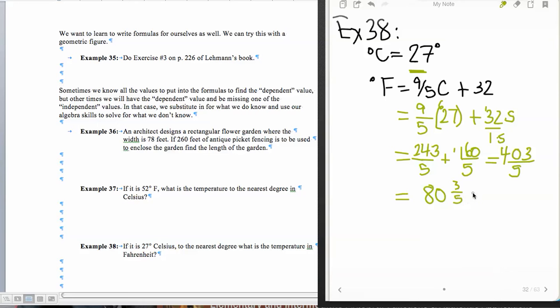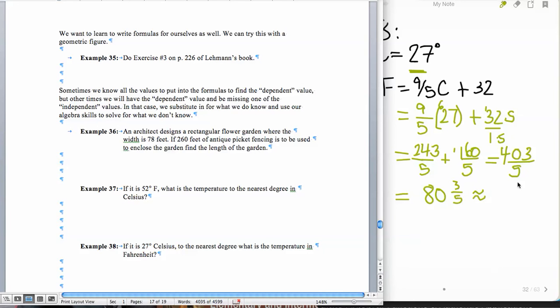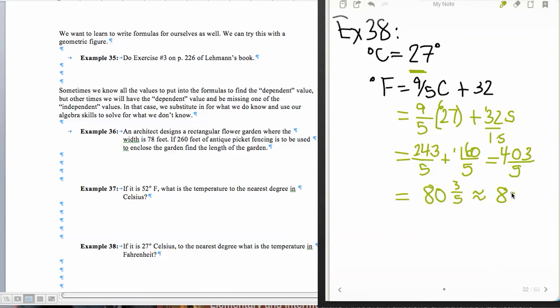And that's 80 and 3/5. If I'm rounding this to the nearest degree, as it says, I'm going to have approximately 81 degrees because 3/5 is 0.6. So this is 80.6, and that means I'm rounding up to 81 degrees Fahrenheit, and that's what I'll box. So that's just a matter of substitution.